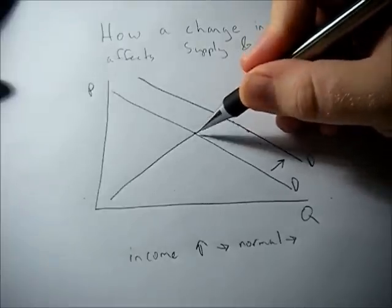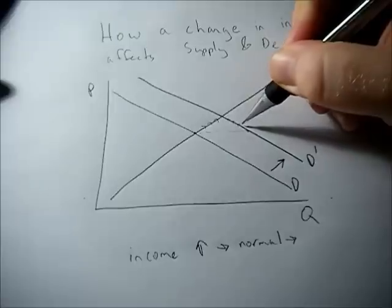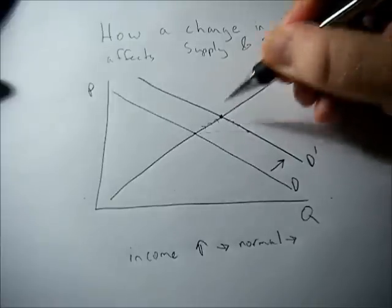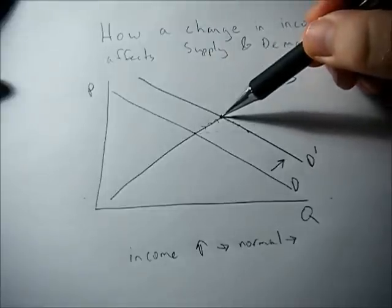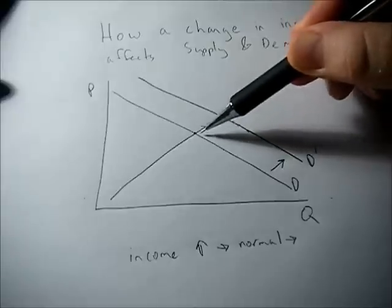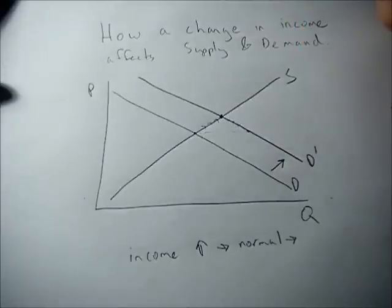Quantity demanded goes down until we reach this new equilibrium, where equilibrium price is higher and equilibrium quantity is greater.